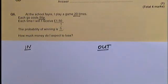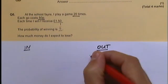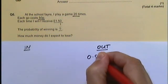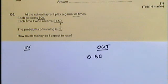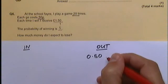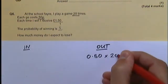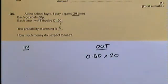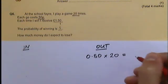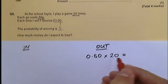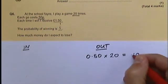In this game, I'm playing 20 times and each time it costs 50 pence. So the amount of money I'm spending — the amount of money going out of my pocket — is 50 pence. I'm paying that amount 20 times, so the total amount of money that I've spent is 50 pence times 20, which is £10.